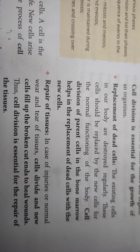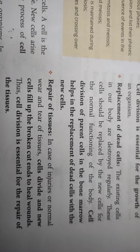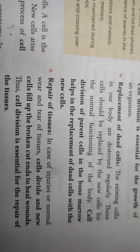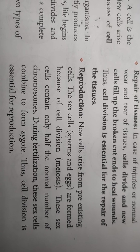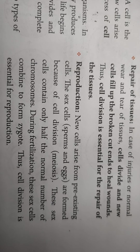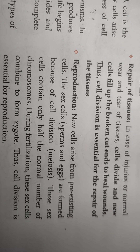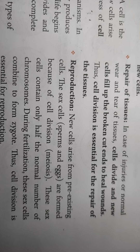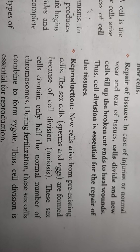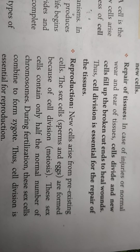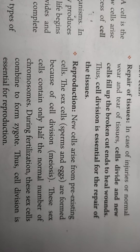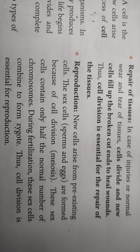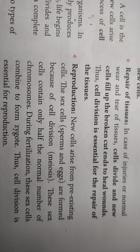Whatever wear and tear occurs in the body needs repairing, and that is also achieved by cell division. Cell division is also helpful in reproduction — new cells arise from pre-existing cells, and sex cells are formed through cell division, so cell division aids in reproduction as well.